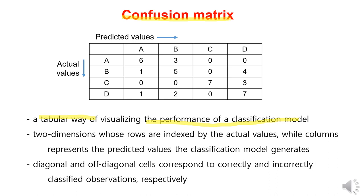It allows for a more in-depth analysis of the model's performance by presenting the predicted results in a tabular format. The confusion matrix is a two-dimensional table where the rows represent the actual classes, and the columns represent the predicted classes by the model or vice versa. The diagonal represents the correctly classified observations, while the off-diagonal elements represent the incorrectly classified observations.